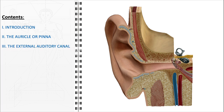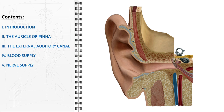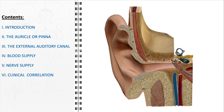Next, we will delve into the external auditory canal, an osteocartilaginous tube that connects the auricle to the tympanic membrane. Additionally, we will touch on the blood supply and venous drainage of the external ear, highlighting how its vascular system supports its functions. The lymphatic drainage of the ear will also be discussed, emphasizing its role in immune response and maintaining tissue health. Furthermore, the video will cover common clinical conditions associated with the external ear. Finally, we'll wrap up with key takeaways.